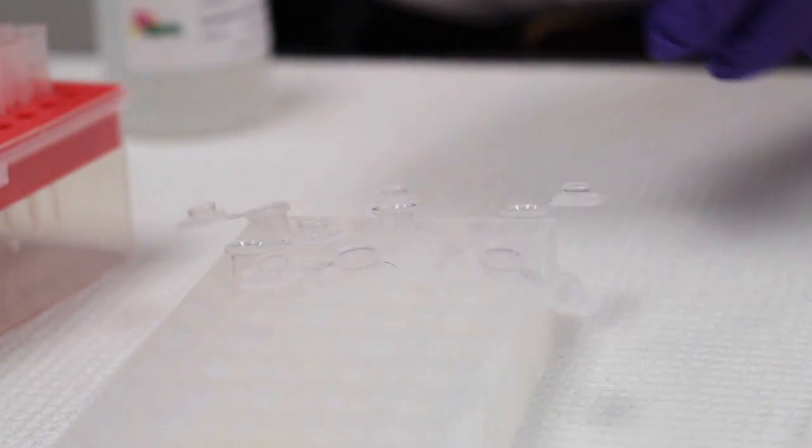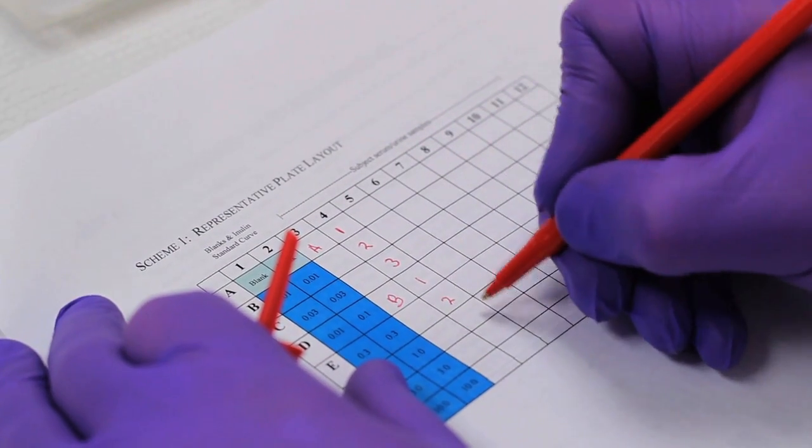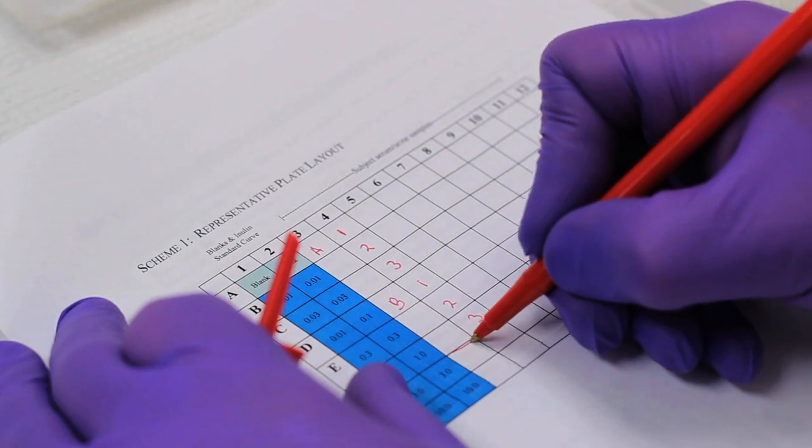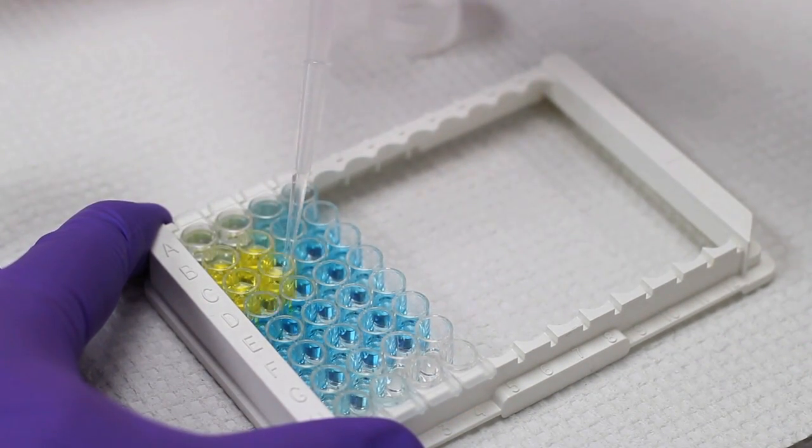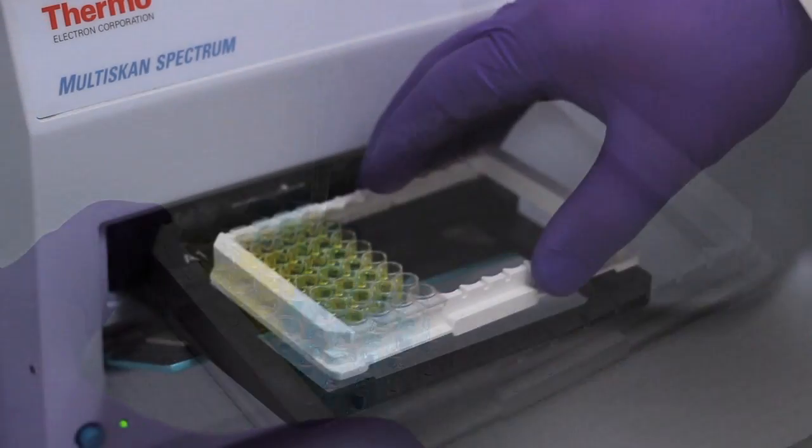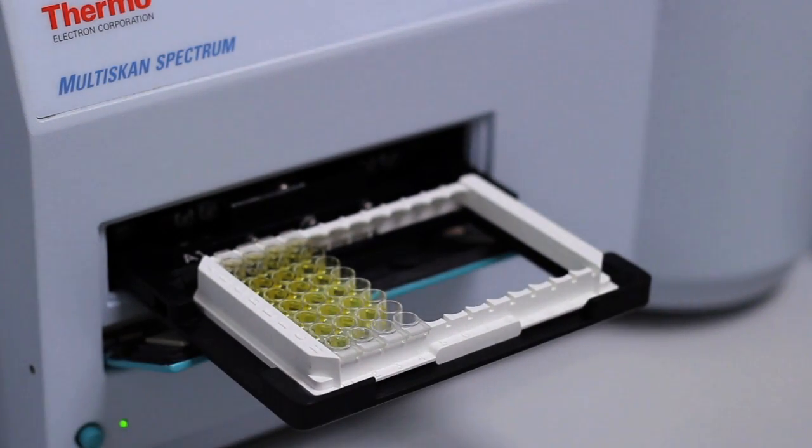The direct measurement of GFR remains the gold standard for assessing renal function. The diagnostic procedure to accurately measure GFR is simple and straightforward, requiring the administration of an ideal filtration marker followed by the withdrawal of timed blood samples or timed blood and urine collections.